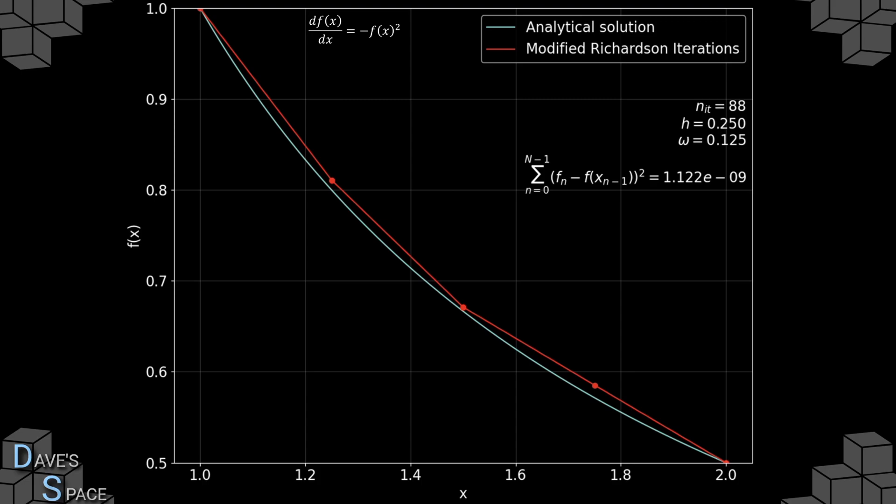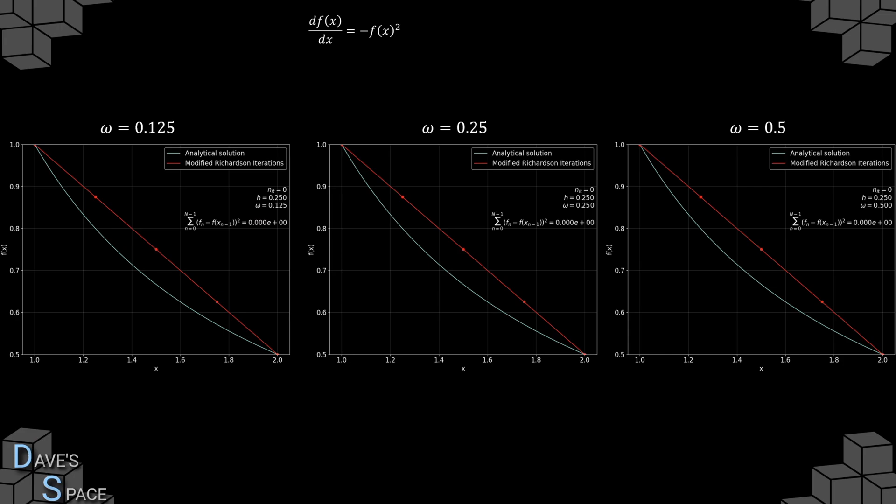If we had allowed this to run for an infinite amount of time, it would eventually approach the analytical solution. Can we speed up the convergence? If we change the omega value, we can see that the number of iterations required changes too.